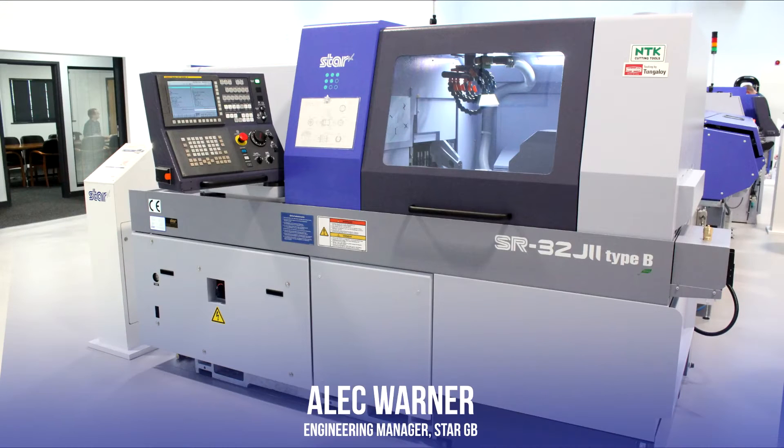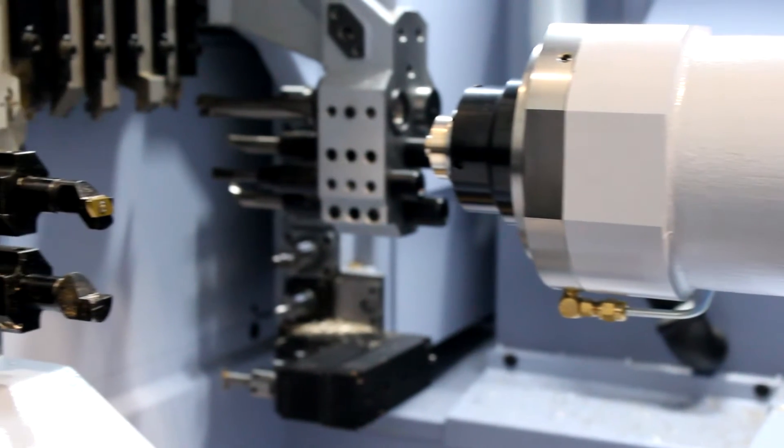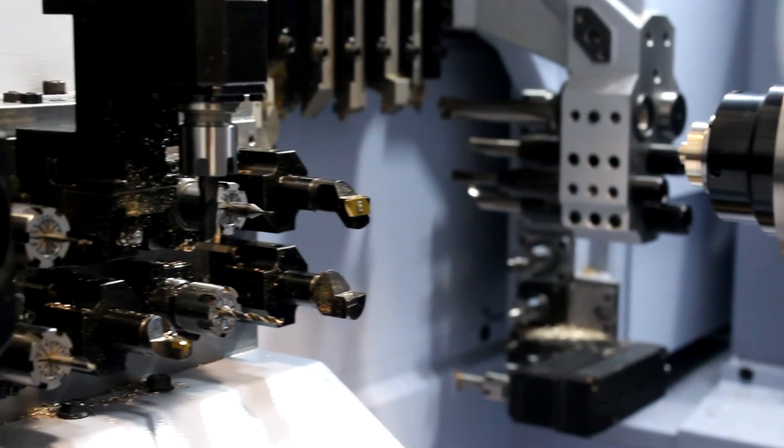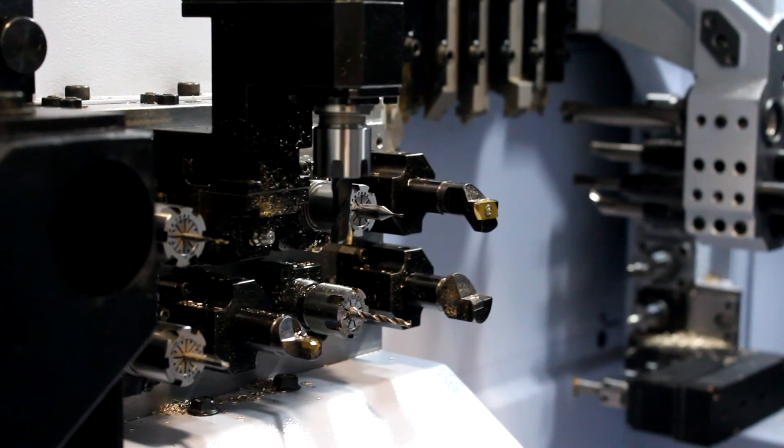This is the SR32J2, the next generation in the SR family. This machine has additional tool positions. We've increased the bat working platen from four stations to eight stations. All of those stations are live.